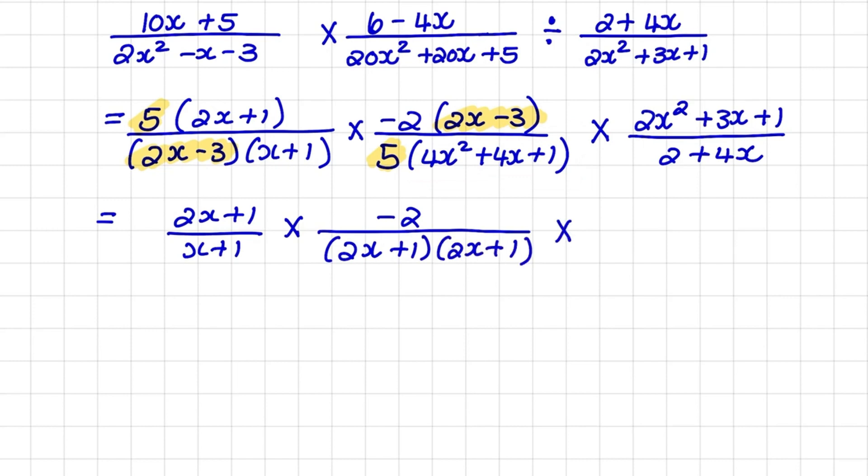Now I move on to my third algebraic fraction. And here we have a trinomial again. And when I factorize, I have 2x plus 1 times x plus 1 over two terms where I can take out a greatest common factor. And the greatest common factor is 2. So my bracket will also be 2x plus 1.